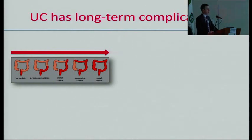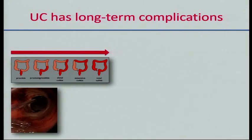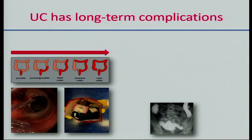One way to understand this is to think about disease extension. We know that this occurs in a proportion of people with colitis — anything up to maybe 30 or 40% of people with distal disease — and that disease extension is associated with a worse outcome in the longer term. We can also think about some of the other effects of inflammation. Although not as common as in Crohn's disease, stricturing is a recognized complication of long-term active inflammation in ulcerative colitis, and more commonly we see colonic dysfunction with a dysfunctional tubular appearance to the colon.